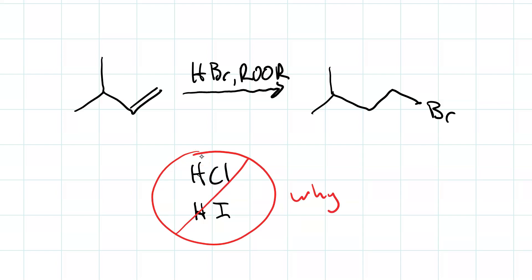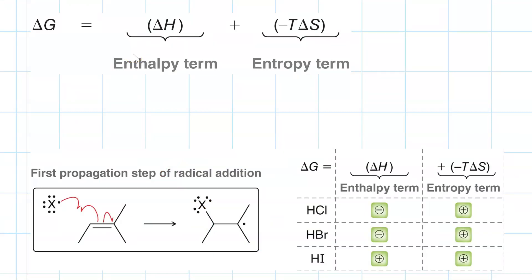Why? Well, the answer to why it's not anti-Markovnikov hydrohalogenation, but only hydrobromination, comes from an understanding of the thermodynamics. Remember, a reaction is spontaneous when delta G is negative, and delta G equals delta H minus T delta S, the enthalpy term and the entropy term.